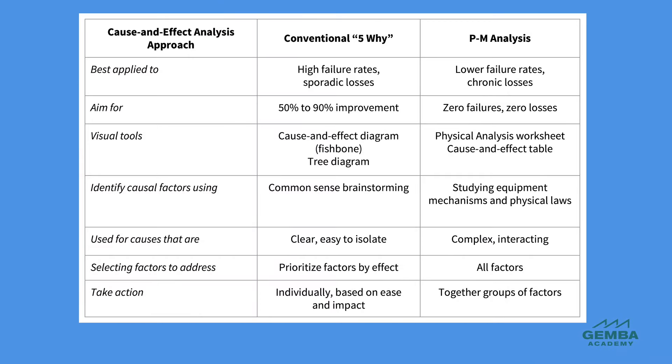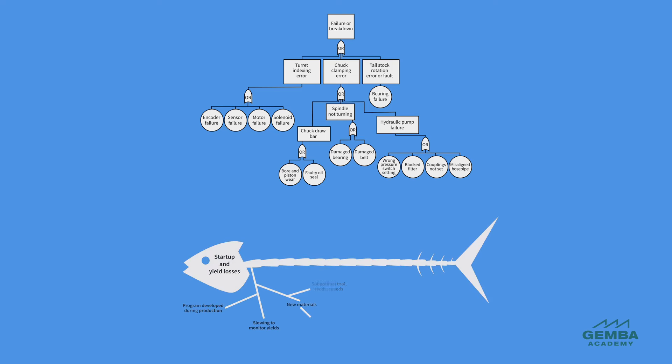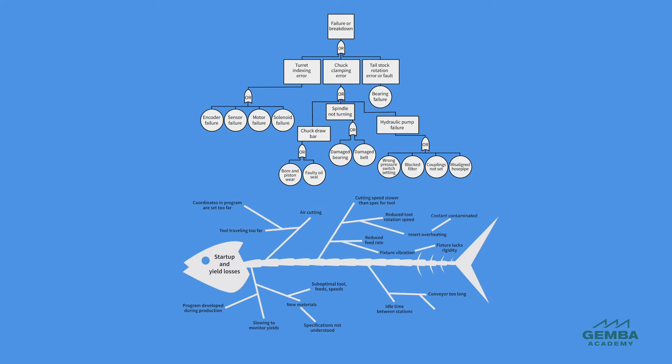There are notable similarities and differences between P-M analysis and conventional root cause analysis techniques such as 5Y. Both methods rely on logical reasoning to understand the whole cause and effect chain to identify comprehensive countermeasures. For problems with clear and assignable causes, the 5Y analysis method works well. A cause and effect investigation in the form of a tree diagram or fishbone diagram reveals the discrete causes that we can address.